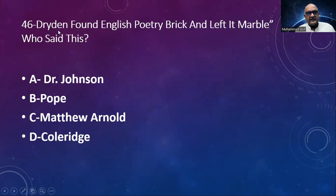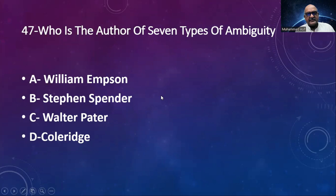Number 46: 'Dryden found English poetry brick and left it marble.' Who said this? Options: Dr. Johnson, Matthew Arnold, Coleridge. The answer is Dr. Johnson. Number 47: Who is the author of Seven Types of Ambiguity? Options: William Empson, Stephen Spender, Walter Pater, S.T. Coleridge. The answer is William Empson.